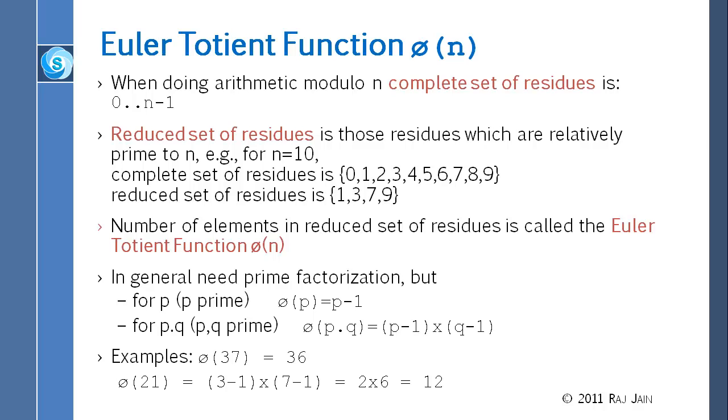So if you take for n equal to 10, this is the complete set, 0 through 9. But 2 is not co-prime to 10, because 2 and 10 have a common factor other than 1. 3 is relatively prime. 4 is not, 5 is not, 6 is not, 7 is, 8 is not, 9 is. So overall, only 4 numbers are relatively prime to 10. So the totient function is 4.